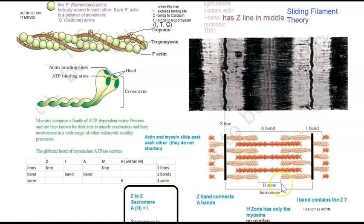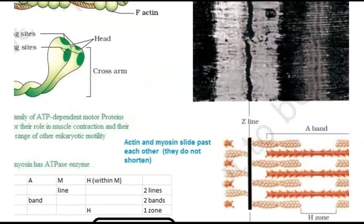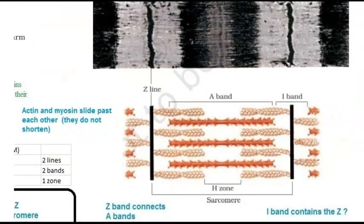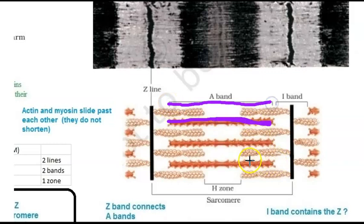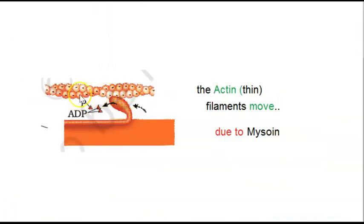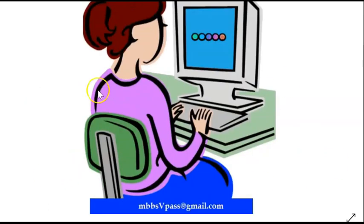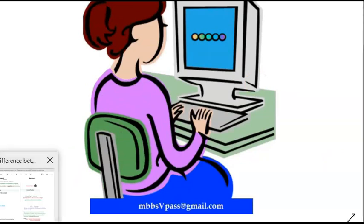The A-band corresponds to the length of myosin and does not change during contraction since myosin doesn't move. The actin thin filaments slide due to the action of myosin — actin moves, myosin stays. This sliding mechanism is the basis of skeletal muscle contraction.